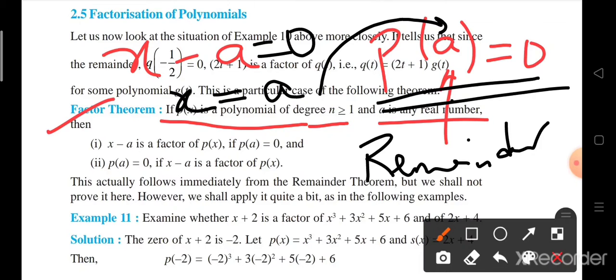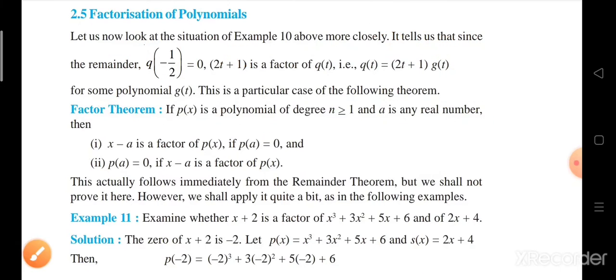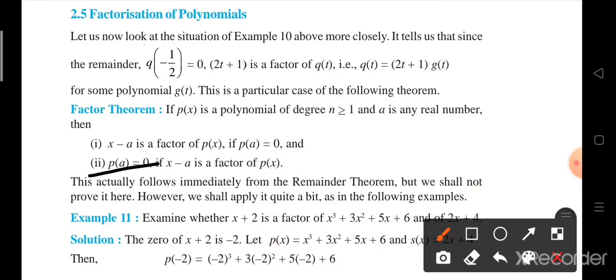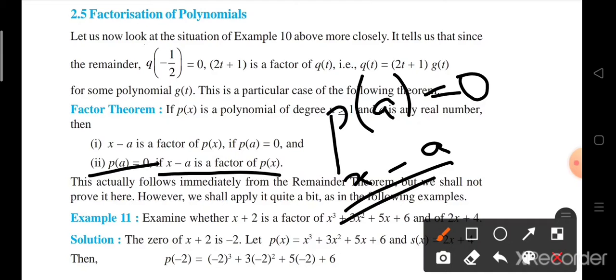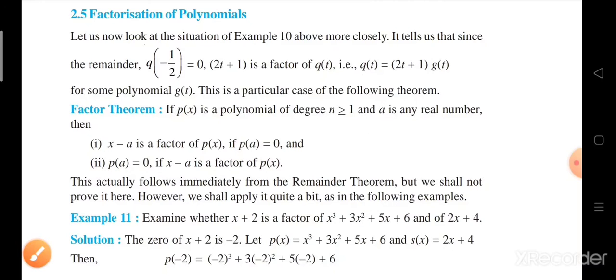Next, second condition is: p at a is equal to 0, so then x minus a is the factor of polynomial p(x). Means, if p at x equal to a has value 0 for the polynomial, then x minus a is the factor of that polynomial. Is it clear? Now, we will do this with the help of an example so that we get clear.